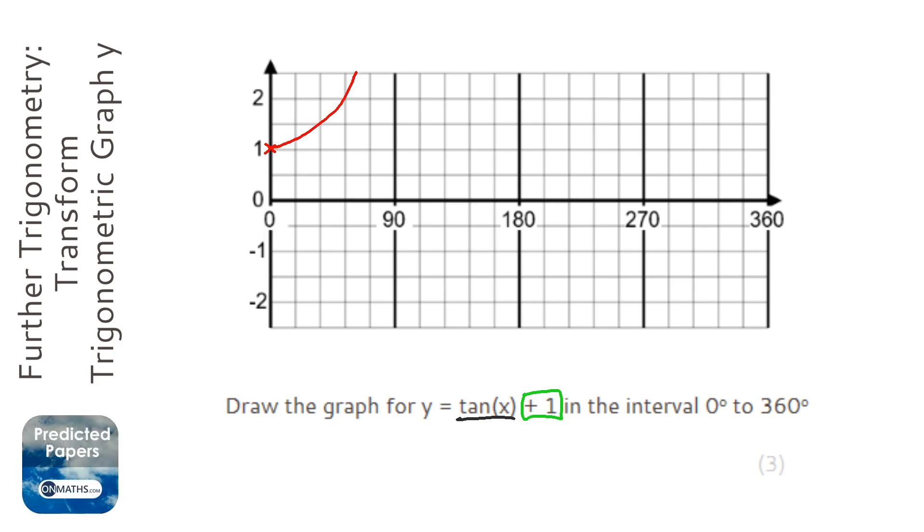Then we're going to go from negative infinity, but we go up to one, so it's going to be like that. And we're going to do the same, go up to positive infinity, and we're going to end up at one, so it's going to be like that.